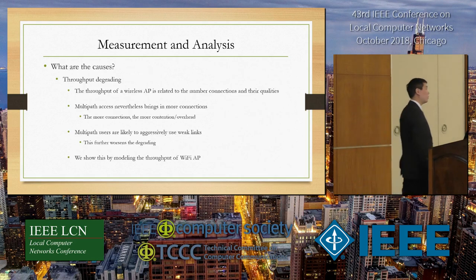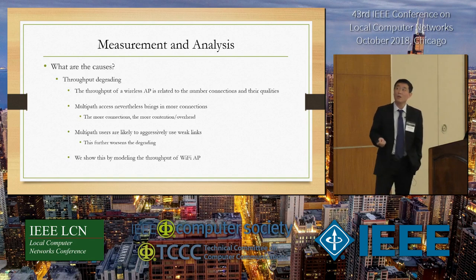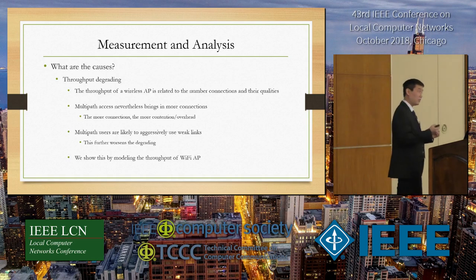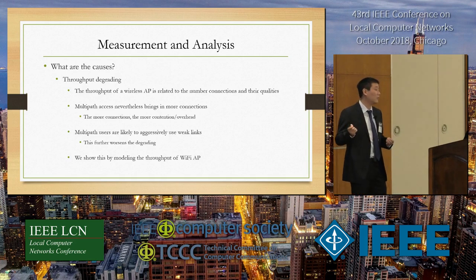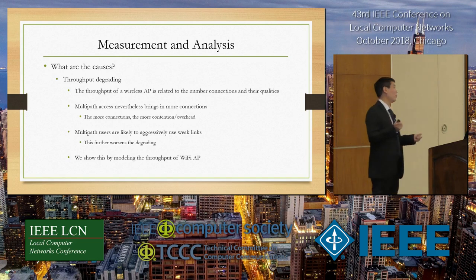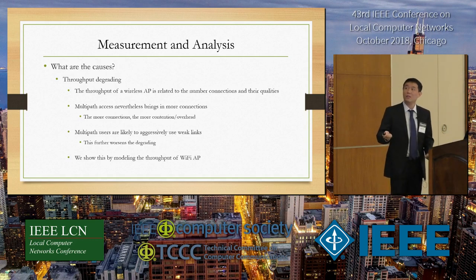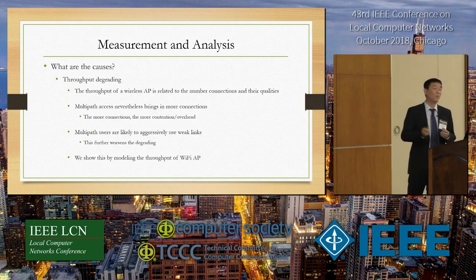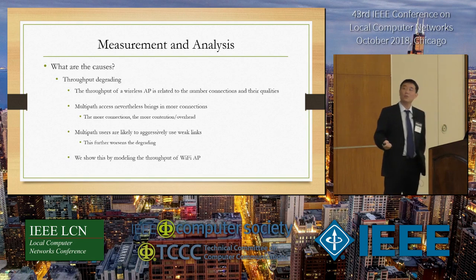What are the reasons for these negative impacts? For throughput degradation, the reason is not complex. For wireless networks, the maximum throughput of a wireless access point is related to the number of connections it serves and their link qualities. The more connections, or the more low-quality connections, the lower throughput the access point can achieve. Multipath access brings more connections, increasing contention and overhead at the access point. Multipath users are likely to be aggressive in aggregating all available connections, even weak ones — a penny is a penny — further worsening degradation.